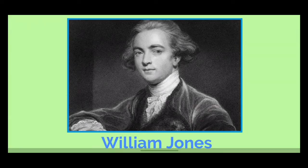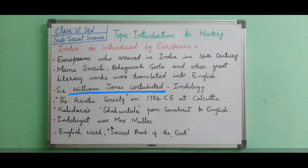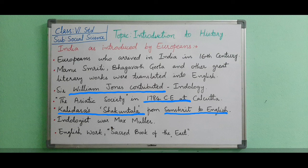Sir William Jones contributed immensely to the study of Indology — the branch of knowledge that studies Indian history. He came to India as a judge of the Supreme Court in Bengal and established the Asiatic Society in 1784 CE at Kolkata. Sir William Jones, who was a multilingual expert, translated great works like Gita Govinda, Manav Dharmashastra, and Kalidasa's Shakuntala from Sanskrit into English.